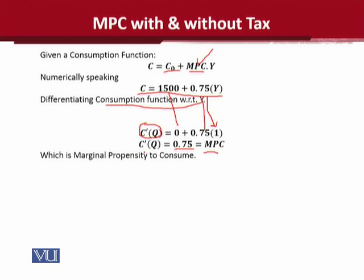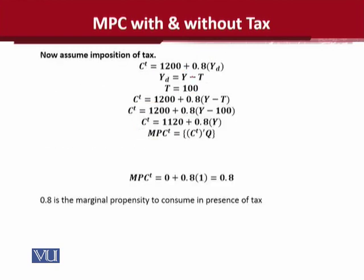This was the case without any imposition of tax. What if we introduce tax? If tax is applied on the income, then we should subtract it from income. In this slide you will see that, after the imposition of tax, Yd is the new symbol — Yd is basically the disposable income, which is income after tax deduction. The value of tax T is 100.